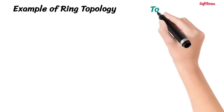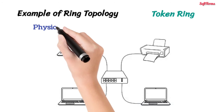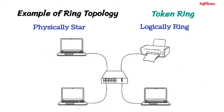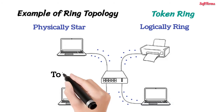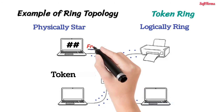An example of ring topology is token ring. Token ring does not use a physical ring topology; instead, it uses physical star and logical ring topology, in which data moves in a circular fashion. Token ring uses a token passing protocol, where a frame called a token keeps circulating on the ring. If one computer has a data frame to transmit, it holds the token and transmits the frame.